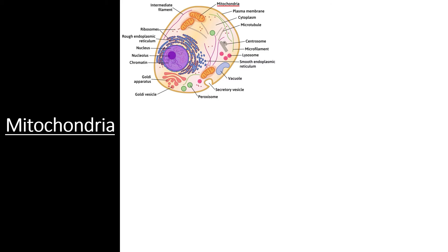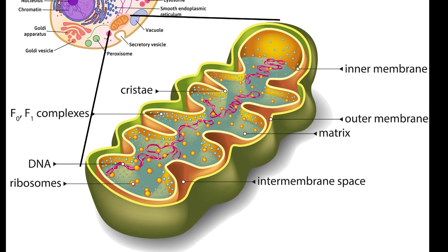Mitochondria are likely one of the most important organelles within eukaryotes, though they are also one of the smallest. In fact, they are about the size of an average bacterial cell. Mitochondria have two membranes, the inner membrane and the outer membrane. While the outer membrane is smooth, the inner membrane contains many folds called cristae, which provide more surface area for important reactions. Specifically, the inner membrane of mitochondria is home to the electron transport chain, an essential part of the process that extracts energy from glucose and stores it in the bonds of ATP for use elsewhere in cells.